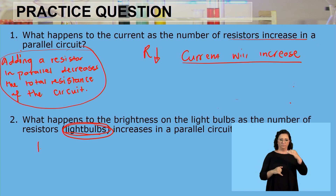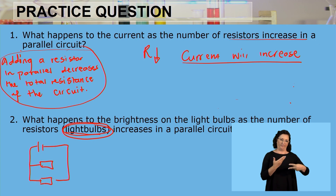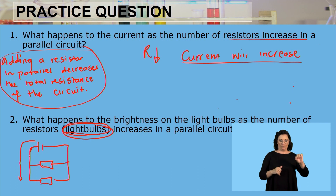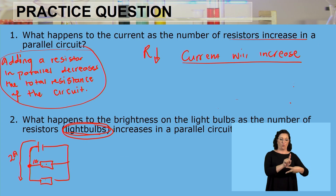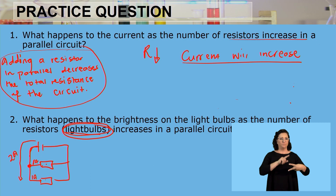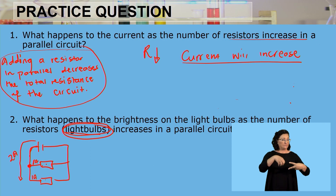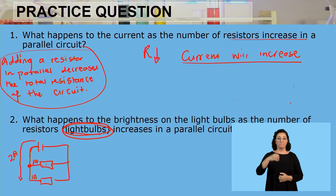We can draw a simple electrical circuit with two light bulbs. As the current is moving through the wires, let's say the total current of the circuit is two amperes and the two resistors are identical. Once the current gets to the junction point, it is going to split into two equal parts — one ampere each. Because they are identical, both resistors will receive the same current strength, which means the brightness of those light bulbs is going to remain the same.